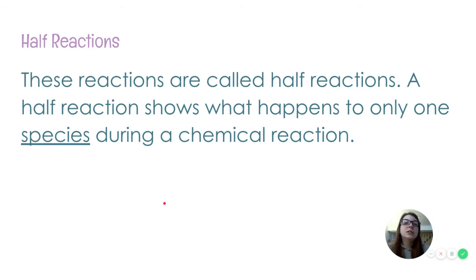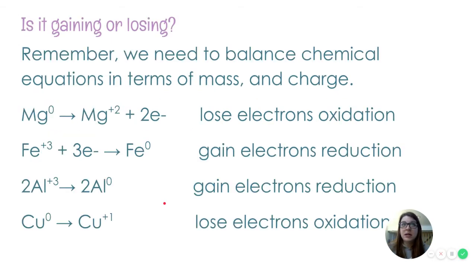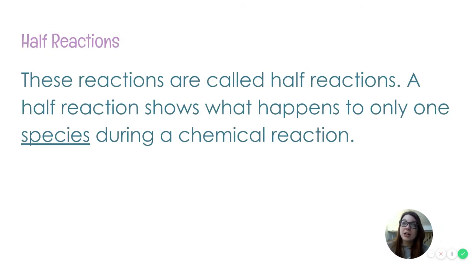Now, these things are called half reactions because, for instance, magnesium here can't just turn into magnesium plus two and send two electrons out into the universe. Doesn't work that way. These two electrons need to be accepted by some other atom. So because it's only showing half of the reaction, we literally call it a half reaction. Half reaction only shows what's happening to one species or one element or compound during a chemical reaction.